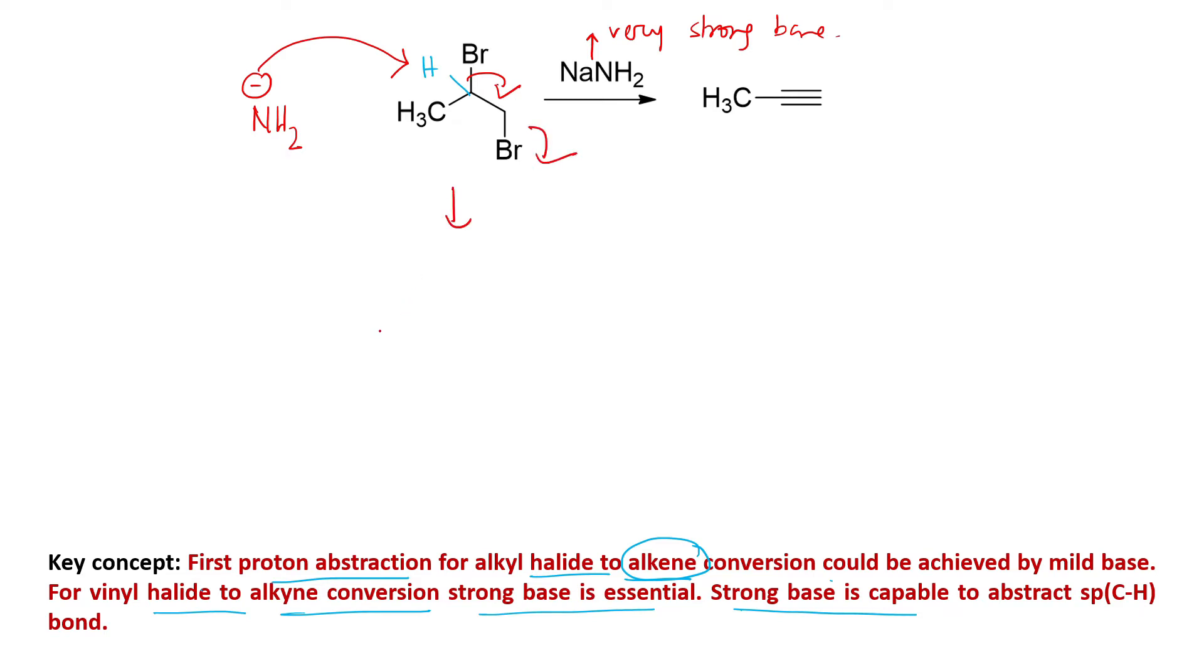It will abstract this proton, it will come, it will leave. In the first step it will produce CH₃ with Br and two hydrogens - this is the alkene via anti-elimination.